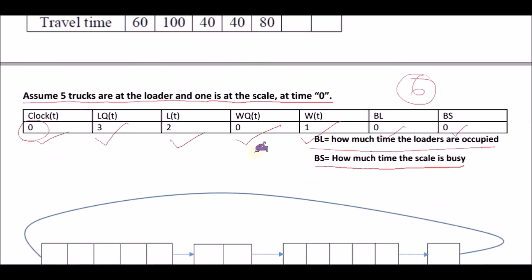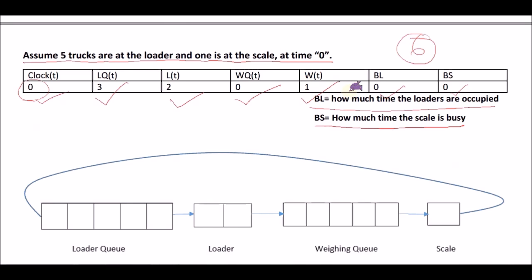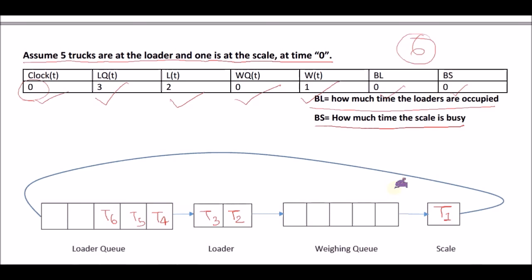We populate the table: truck T1 is at the scale, T2 and T3 are in the loader, and T4, T5, T6 are waiting in the loader queue. Now comes the most critical part — filling the future event list. The future event list indicates what events are going to happen in the future given the present scenario. After some time T passes, what events will occur?